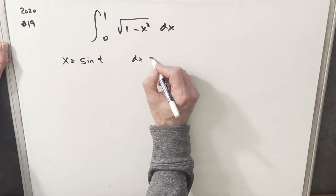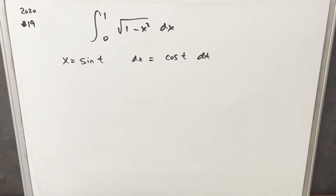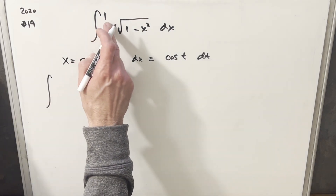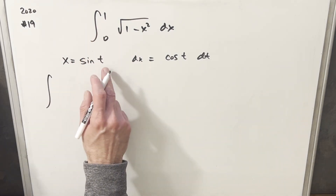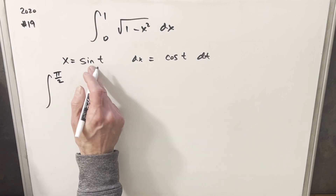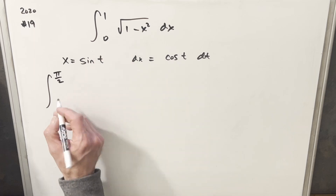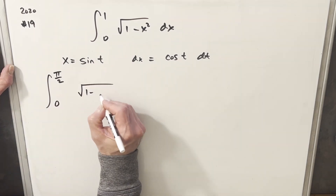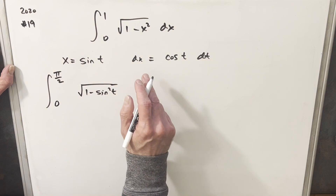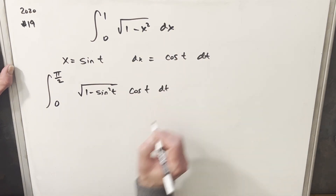That's going to make dx equal to cosine t dt. Then we'll make the substitution. Updating our bounds: when t is pi over 2, sine of pi over 2 is 1. And when sine is 0, x is 0. Then we're going to have the square root of 1 minus sine squared t, and our dx is just going to be cosine t dt.